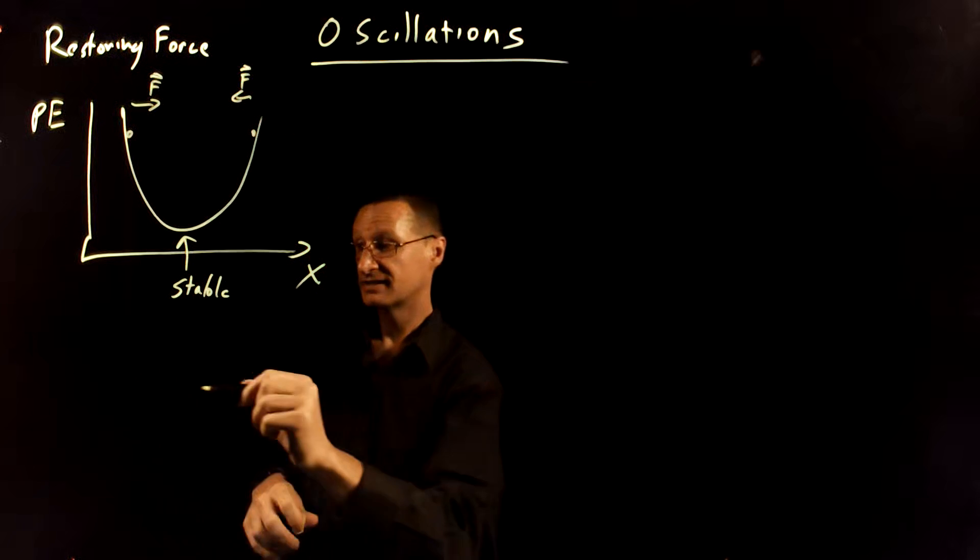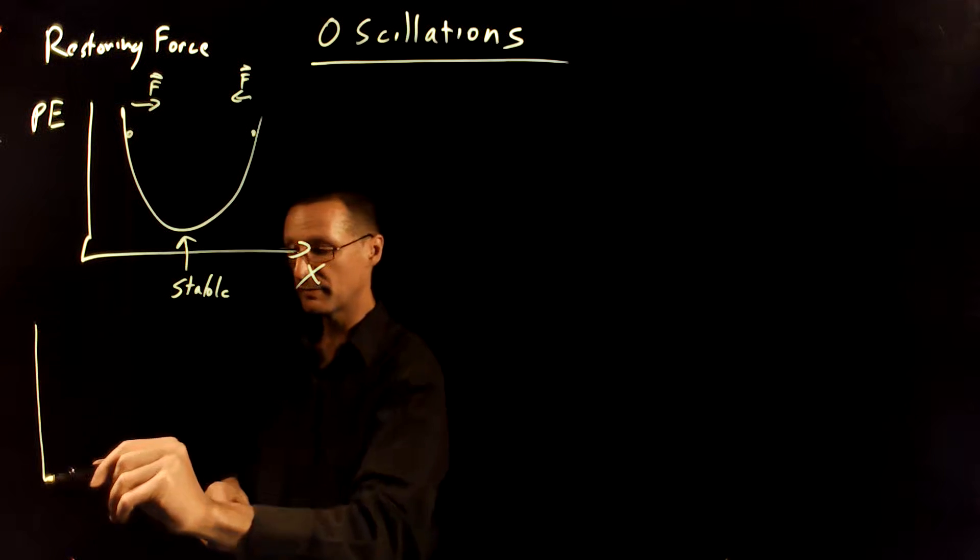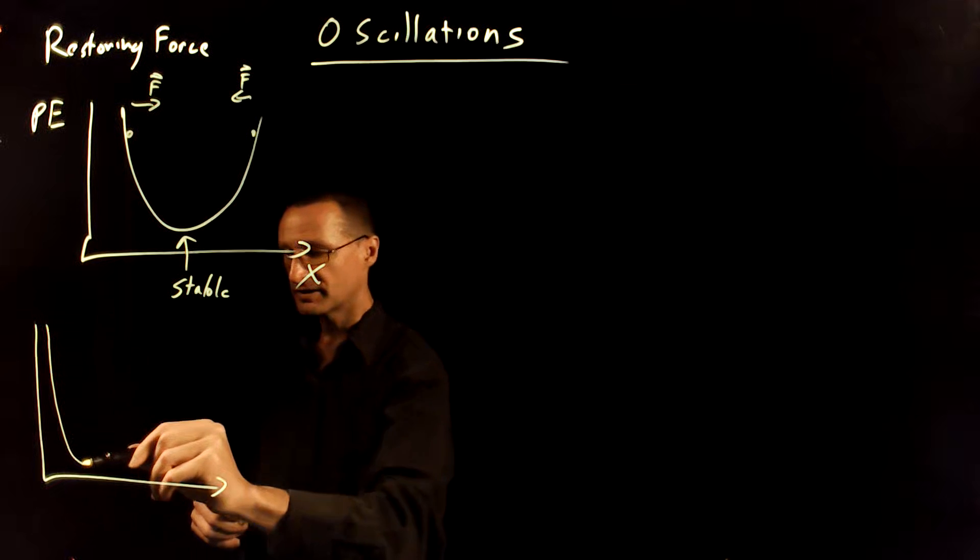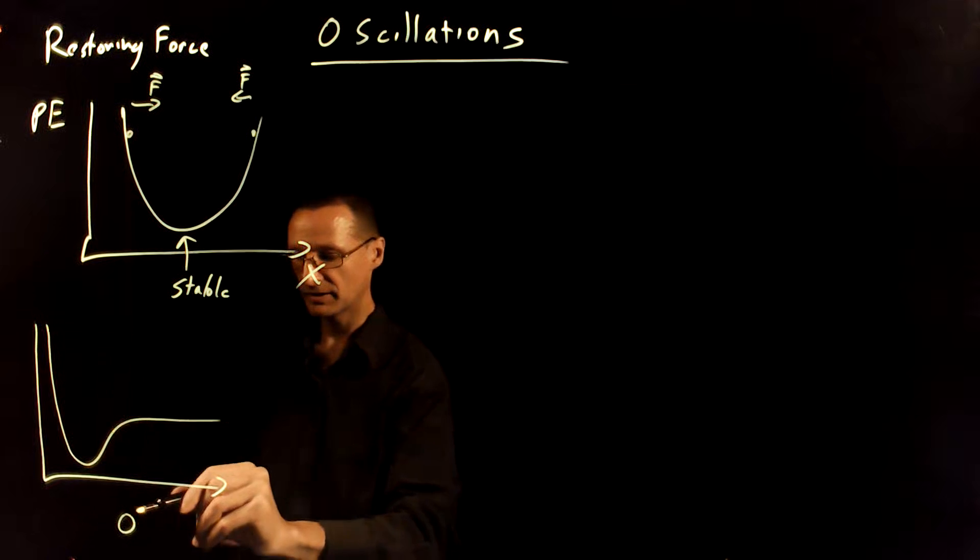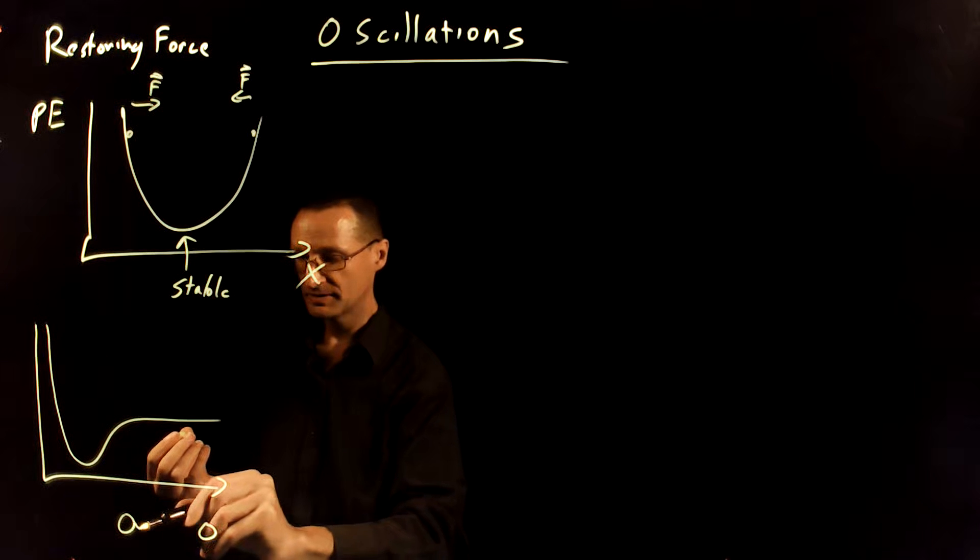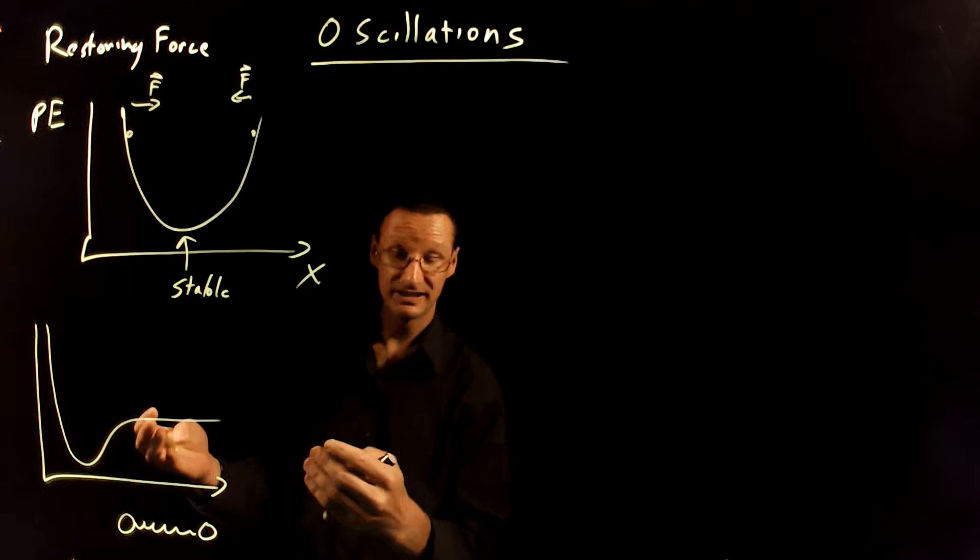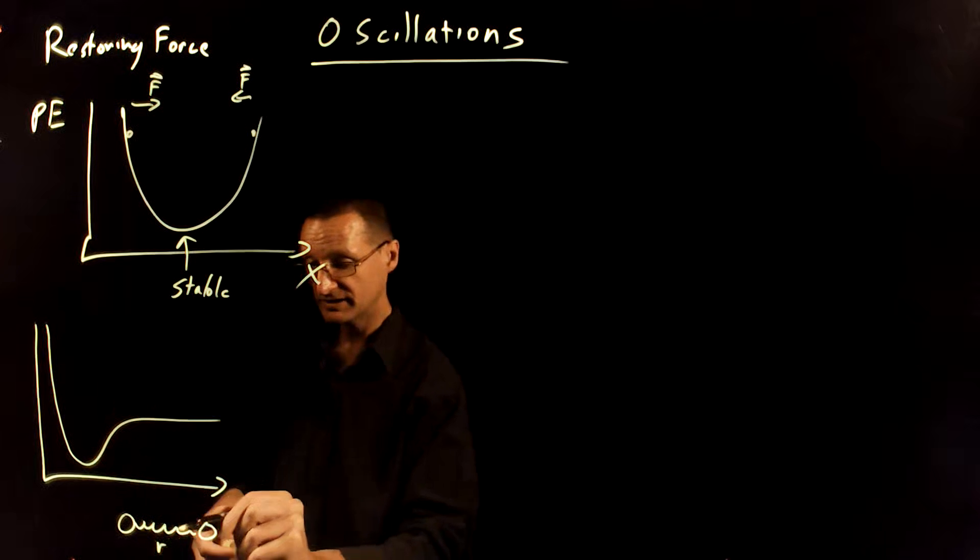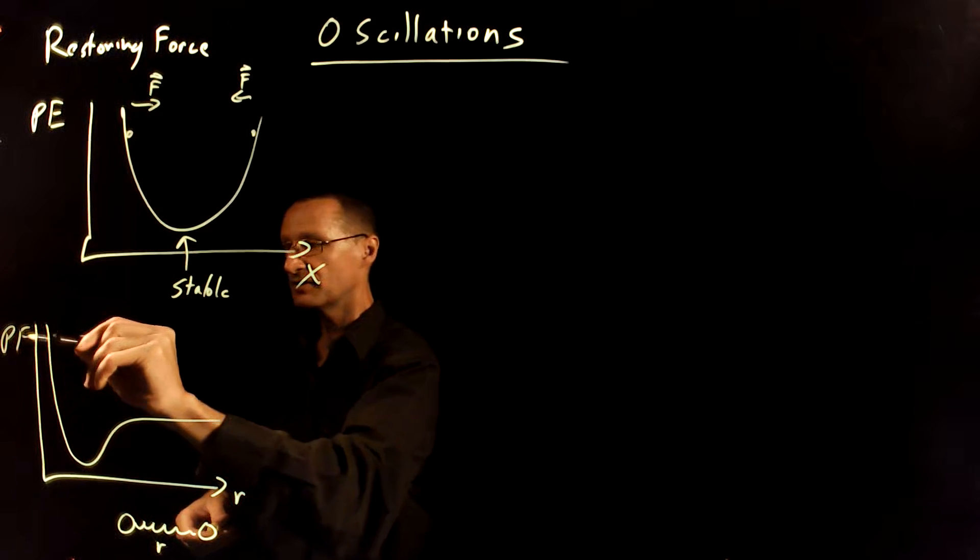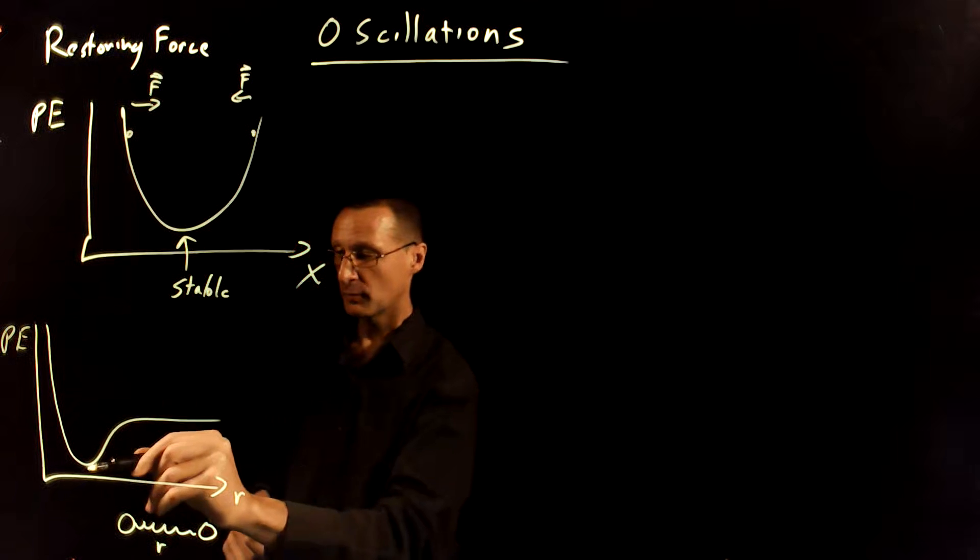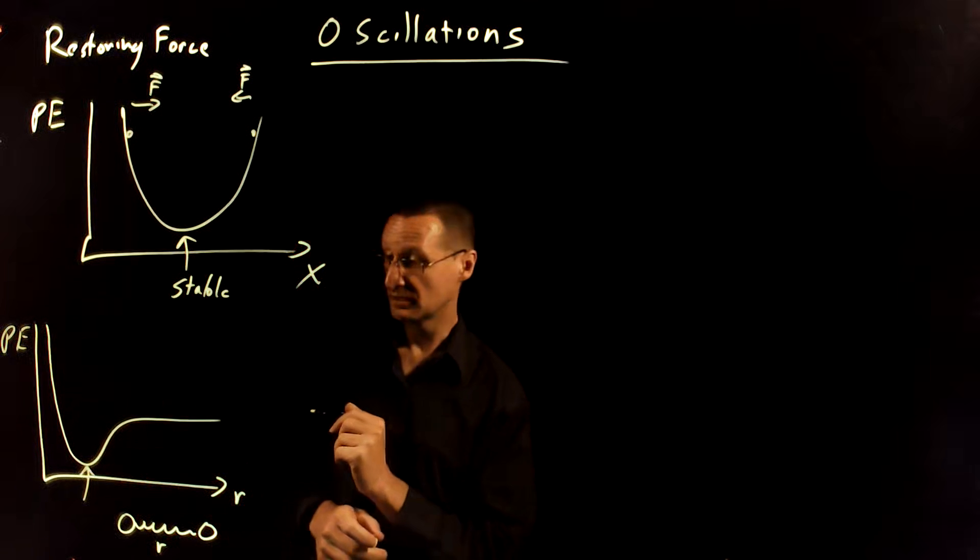A more practical example of this is with molecules. Remember that molecules have a potential energy function that looks like this. So if you imagine a molecule has two atoms and they're connected through some force that behaves kind of like a spring, and their separation is R here, the potential energy function has this general shape, where this is the stable equilibrium point.